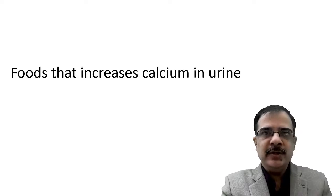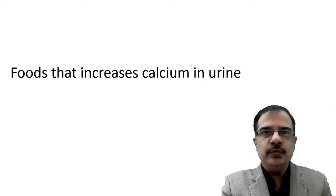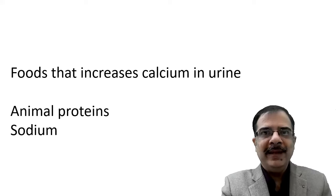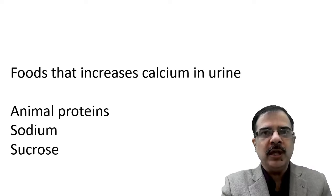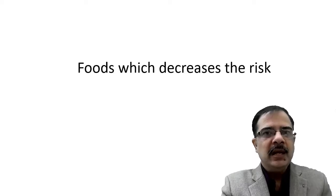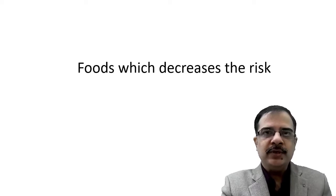There are also food items which increase calcium in the urine and they are to be avoided. These include animal proteins, sodium, and sucrose — the common sugar that we consume.